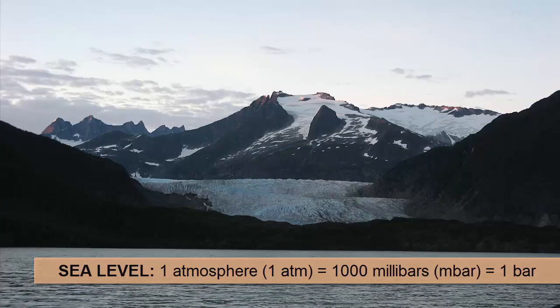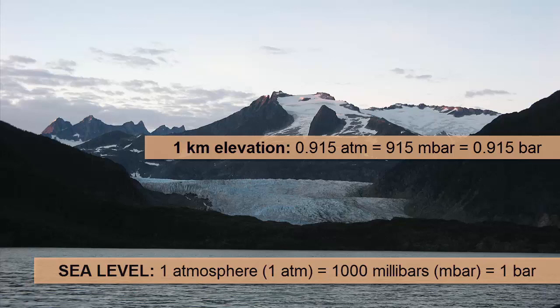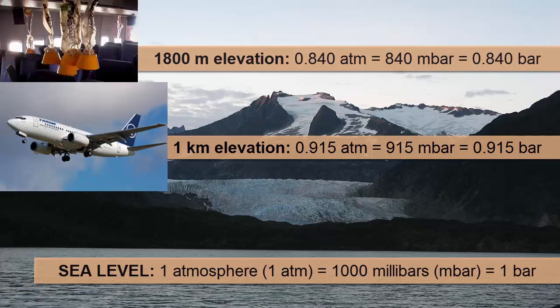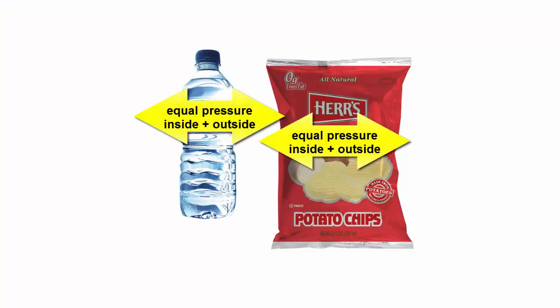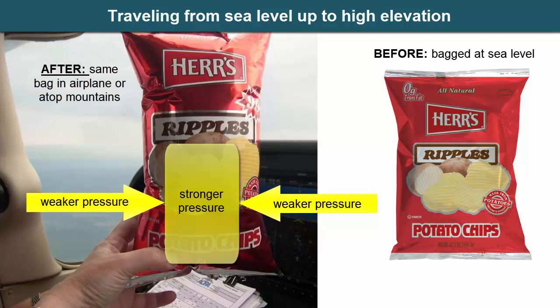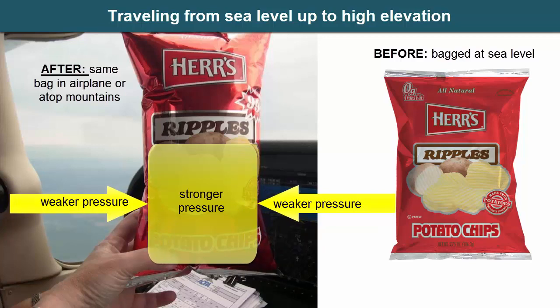Meteorologists use the units of atmospheres and bars to compare pressures at various levels in the atmosphere. At sea level, the pressure is approximately one atmosphere, otherwise stated as one bar or 1,000 millibars. As we move up a mountain or fly in a plane, there is less weight or pressure above us. Fewer molecules means less oxygen to breathe, so we have to pressurize the inside of airplanes. Potato chips and water are bagged and bottled at the same pressure as the air around them. When we carry potato chips bagged at sea level up to the mountains where the outside pressure is lower, the inside pressure is now much greater and the bags expand and can pop.